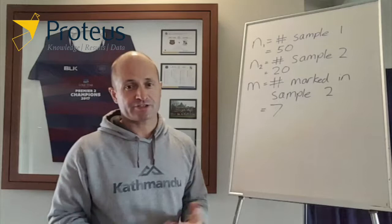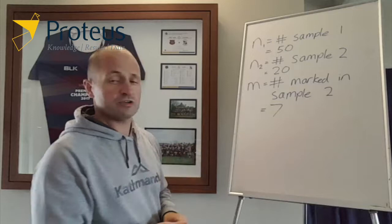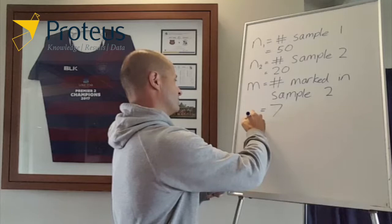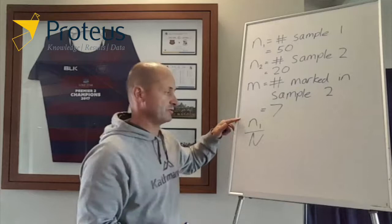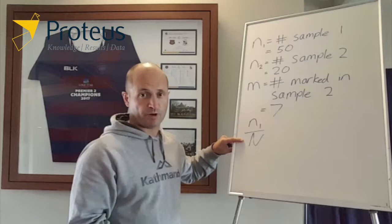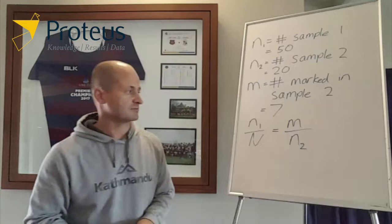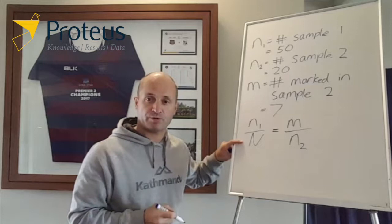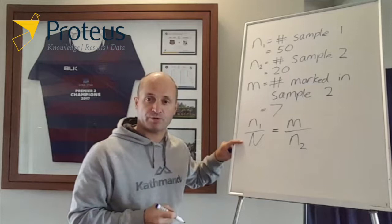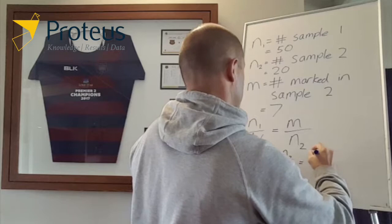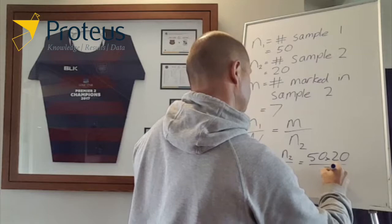So to estimate the total population size — in this case the number of beers drunk last night — we assume that the ratio of marked individuals overall, that fraction of the total population size N, is the same as the fraction of marked individuals in our second sample. So that is M divided by N2. If we rearrange that, we can estimate the population size, big N. We get N equals N1 times N2 divided by M.